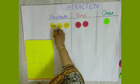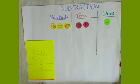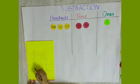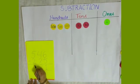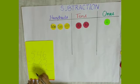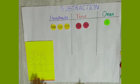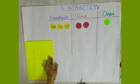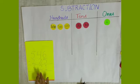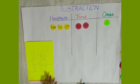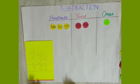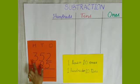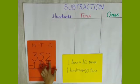Then in the 100s column we have to take away 2 hundreds. We will take away 2 hundreds and we are left with 3 hundreds. So we write 3 here. If we take away 225 from 546, the result is 321.